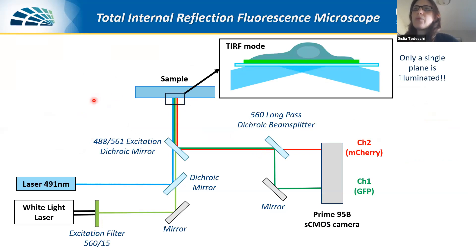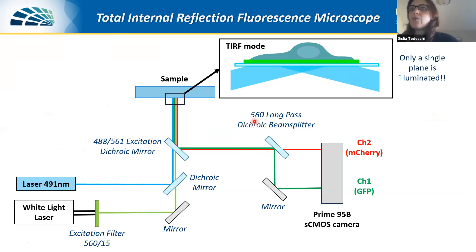Once we confirmed our system didn't alter the physiology, we moved to our measurements. We were using a TIRF microscope. For some samples, we used GFP tagging and for others mTaRi tagging, so our system had two excitations. Since we are looking at proteins in the membrane, we used the TIRF mode where only a single plane is illuminated, collecting signal essentially only from the membrane. The fluorescence signal was detected, split into two channels, and we used a CMOS camera.